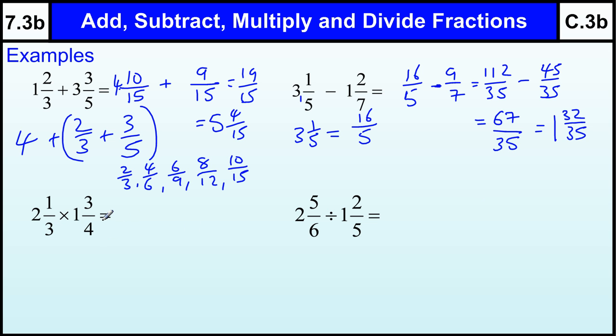Multiplying. Again, best to change to top heavy fractions. So the quickest way to do that is to times the whole number by the denominator and add the numerator. So 2 times 3 is 6 plus 1 is 7 thirds. 1 times 4 is 4 plus 3 is 7 quarters. And then we've got to multiply those two together. 7 sevens are 49, 3 fours are 12. 12 into 49 goes 4 times because 4 twelves are 48 and 1 left over. So 4 and 1 twelfth.